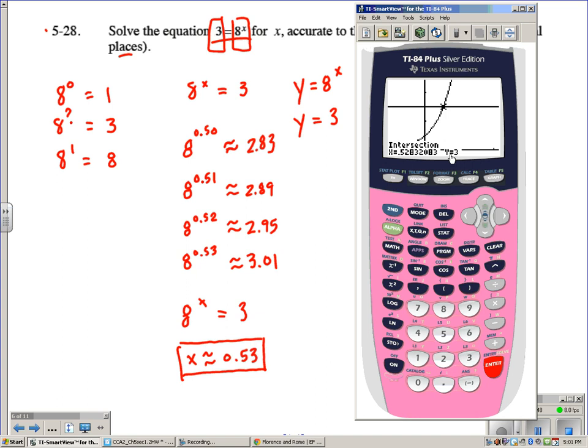When y is 3, we have x is 0.52832. So, our approximation of 0.53 was pretty close there. And since we were only allowed to go to two decimal places, this is the closest number to 0.5283, yada, yada, yada.